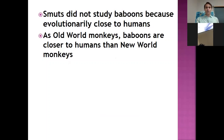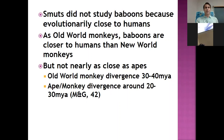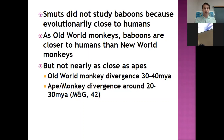Going back to our evolutionary chart: we're talking about baboons, which are Old World monkeys. They're closer to humans than the New World monkeys, but not as close as the apes are. The Old World monkeys diverged from the New World monkeys about 30 to 40 million years ago. Then there's another divergence within Africa between the apes and the monkeys at about 20 to 30 million years ago. The quickest way to distinguish apes from monkeys is that apes don't have tails, and they tend to be larger than monkeys.